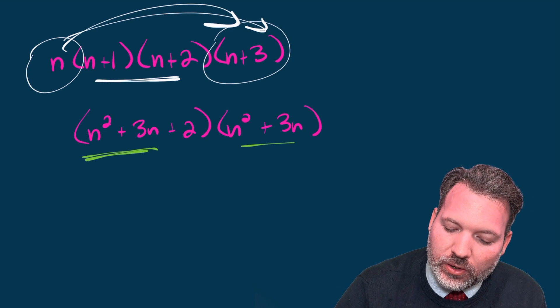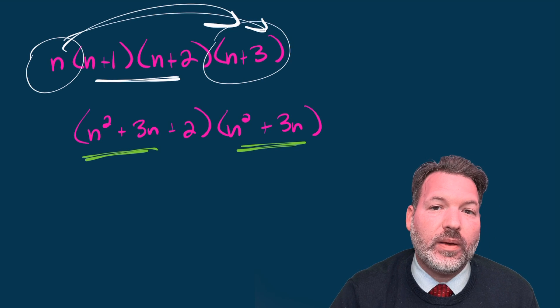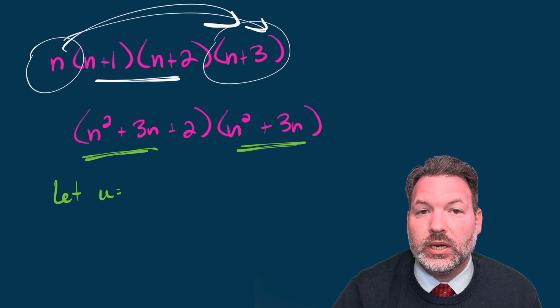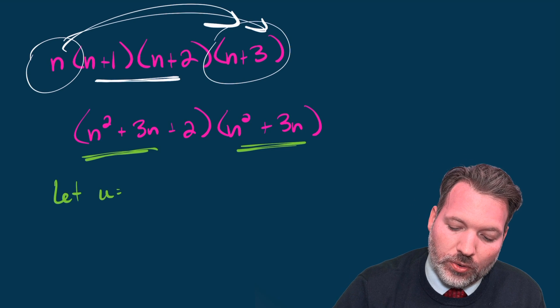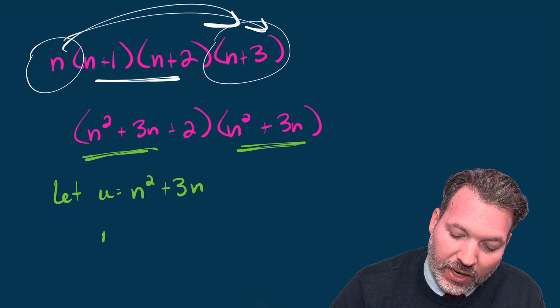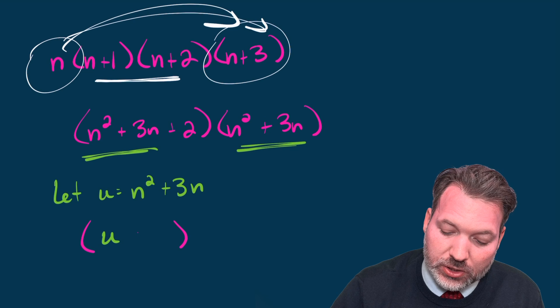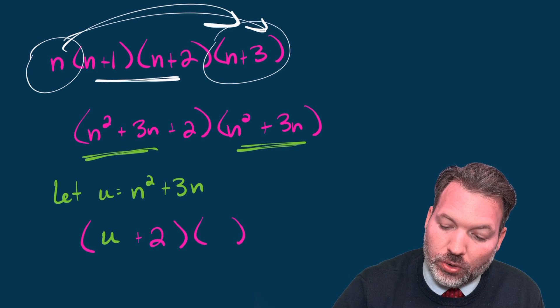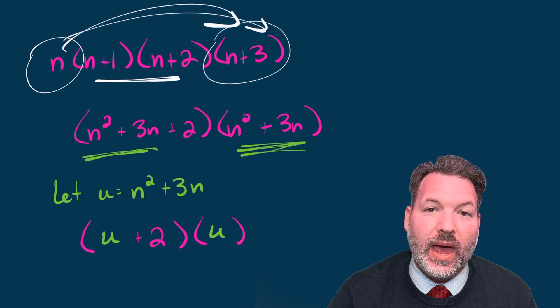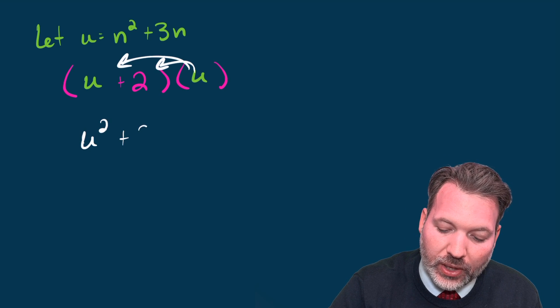Now, you should notice at this stage, oh, those are kind of similar. They're the same expression, n squared plus three n, just one of them has a plus two. So let's actually engage in a little bit of clever substitution. Let's name another variable u, and u is going to stand for n squared plus three n. This means we can actually rewrite our product from before, not as n squared plus three n plus two anymore, but now as u plus two times u itself. Again, the u being n squared plus three n. If we simplify this once more by distributing, we end up with u squared plus two u.